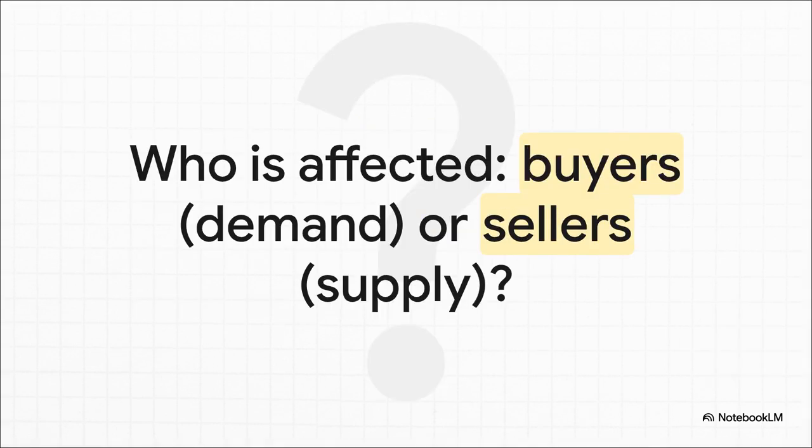And you really have to think about this one. Does a higher water bill for the farmer change your desire to buy tomatoes? Probably not. But it absolutely changes the farmer's ability to produce them. The higher cost directly hits the producers, the sellers. So this is a change in supply.